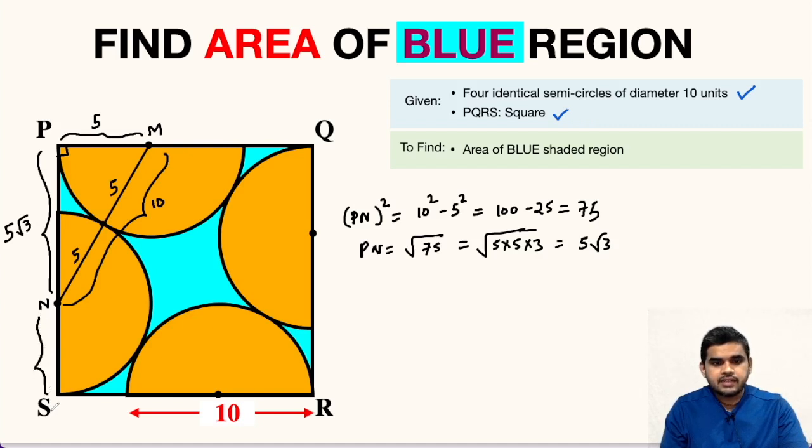And what about NS? NS will be the radius of this semicircle. So this will be 5 units. Now from here we can get the side of this square PS. So PS can be written as PN, that means 5 root 3, plus NS, that is 5. So this will be 5 root 3 plus 5 units.